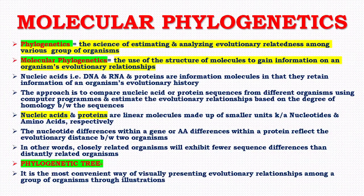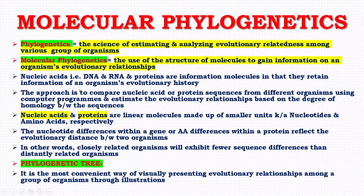What is the meaning of the term phylogenetics? Phylogenetics is the branch or the science of estimating and analyzing evolutionary relatedness among various groups of organisms. And molecular phylogenetics is the use of the structure of molecules to gain information on an organism's evolutionary relationship. Nucleic acids such as DNA and RNA and proteins are information molecules in that they retain information of an organism's evolutionary history. The approach is to compare nucleic acid or protein sequences from different organisms using computer programs and estimate the evolutionary relationship based on the degree of homology between the sequences.